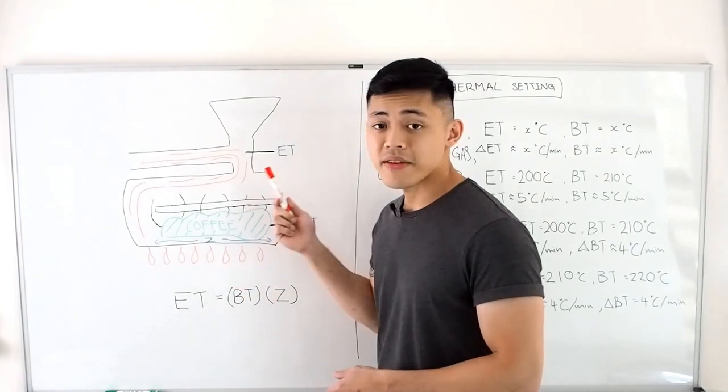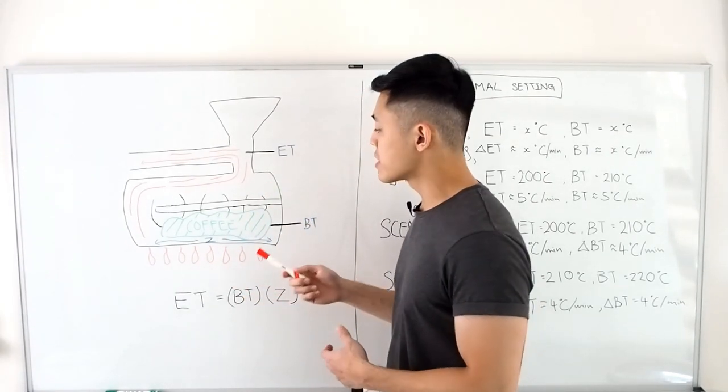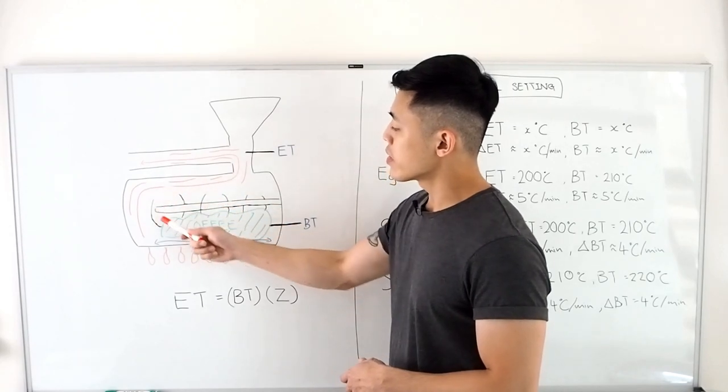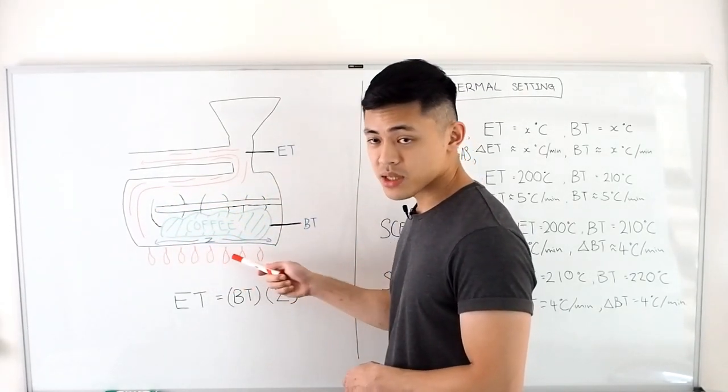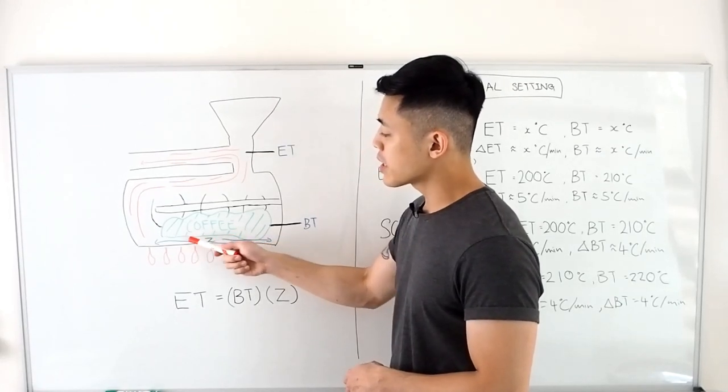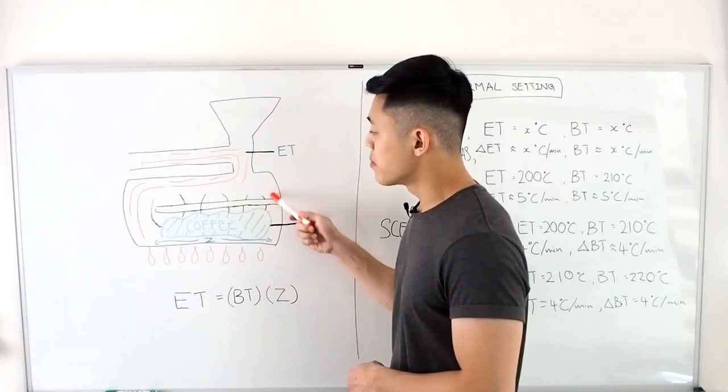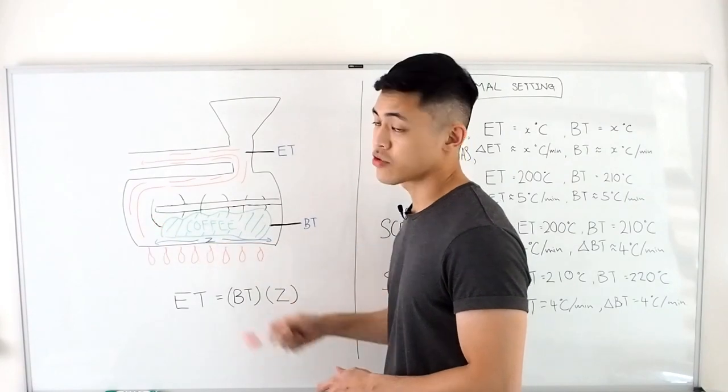Now the environment temperature is a direct result of the air within the drum roaster interacting with the radiant heat from the flames and also in contact with the hot metal along the sides of the drum.